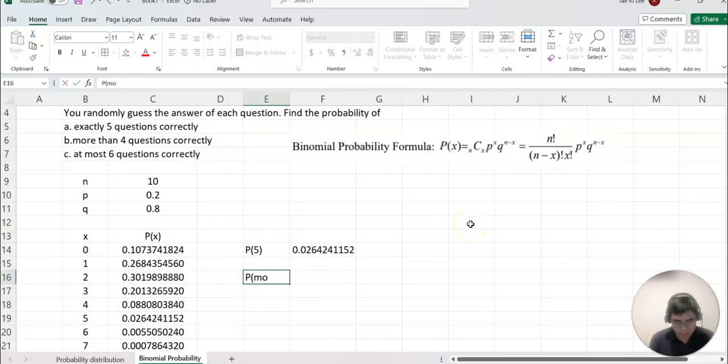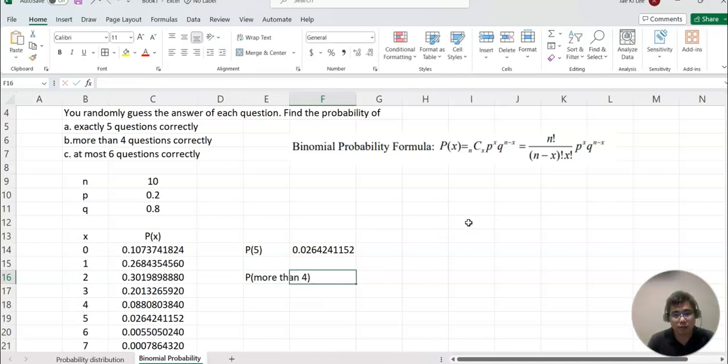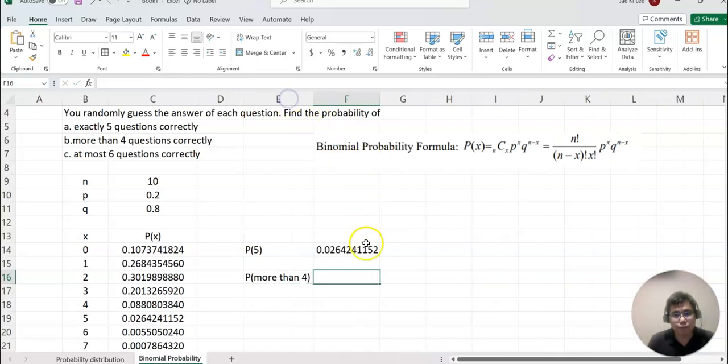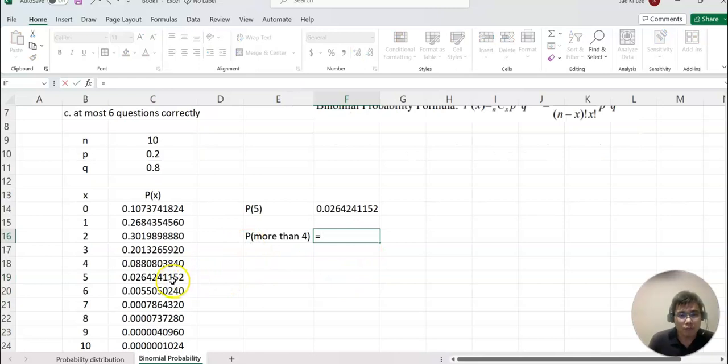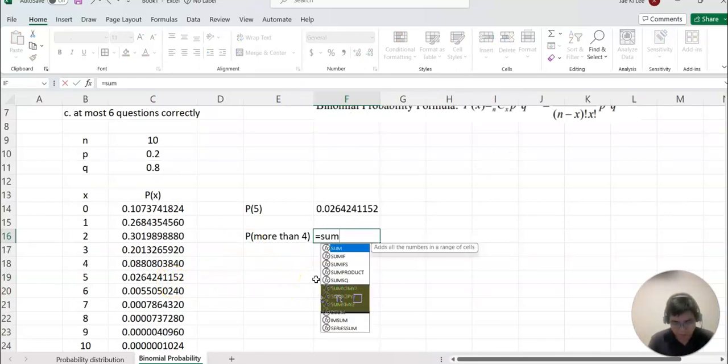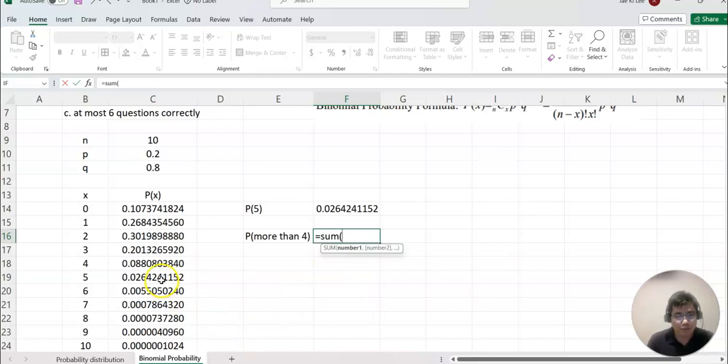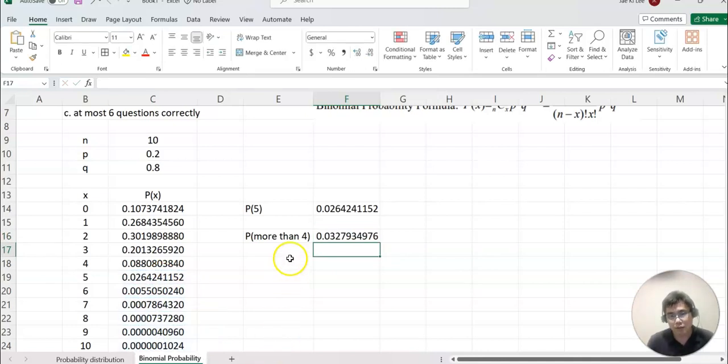Now next, probability more than four questions correctly. More than four means five through ten, so you can make sum and then open the parentheses and then five through ten, and enter. That will be the answer.